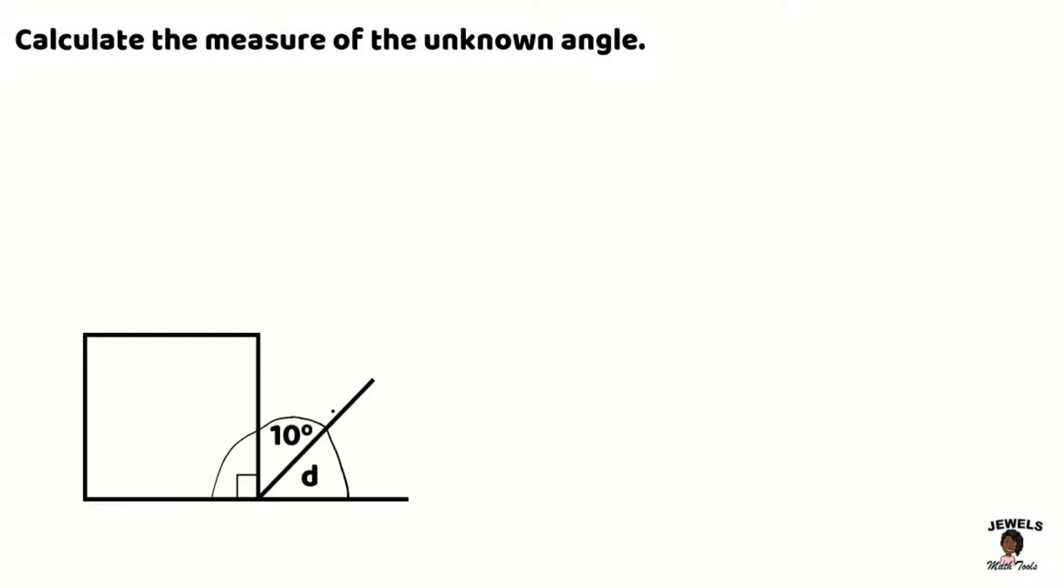So that means my right angle, which is this box here indicating 90 degrees, plus my 10 degrees, plus D, should all equal 180 degrees. And just like we did before, we're going to sum the numbers that were given to us.